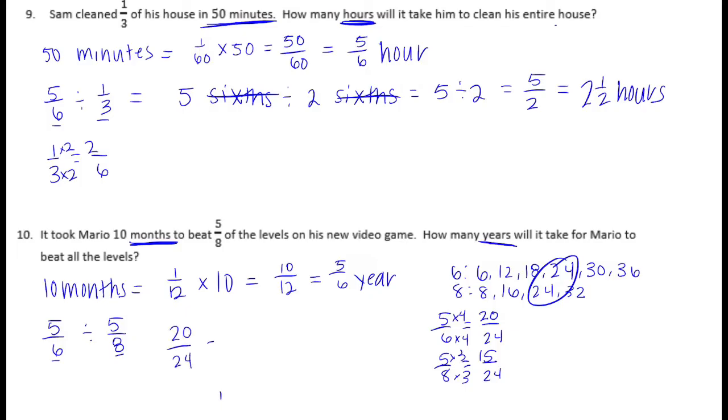So 20 24ths divided by 15 would be, these will make 1, and 20 divided by 15 we could turn into 20 15ths, or 1 and 5 15ths, which if we reduce would be 1 and 1 third. So it would take 1 and 1 third years to master all the levels.